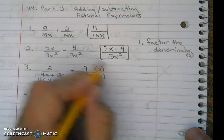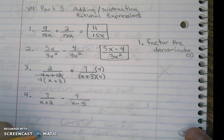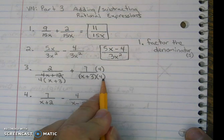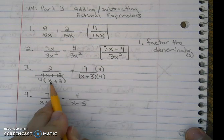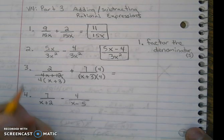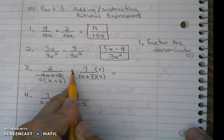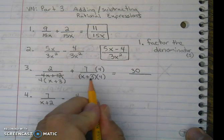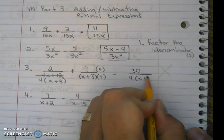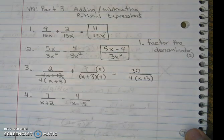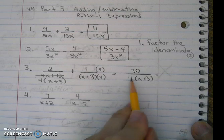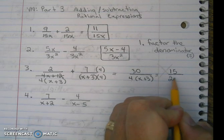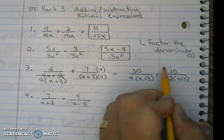We're changing how the fraction looks but not its value, because anything times one is itself. Now that the denominators are the same, we add the numerators: 2 plus 28 is 30, and the denominator stays the same. We can simplify by 2 — 2 goes into 30 fifteen times, and 2 goes into 4 twice. Always simplify your answer if possible.